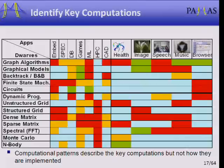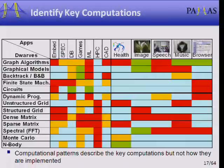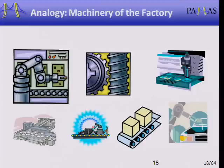With 13 types of computations — think of them as 13 different atoms — we believe we can build arbitrarily complex computations. This is like the machinery of the factory. So if you walk out of here with one thing, it's that we're moving from a building to a factory view.